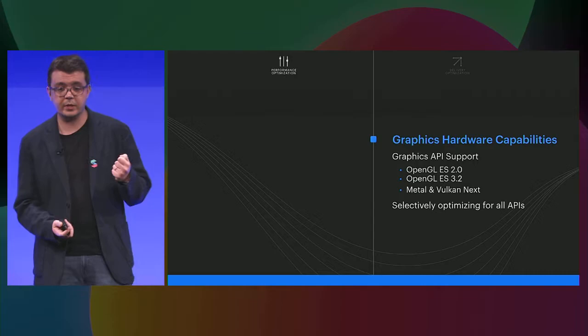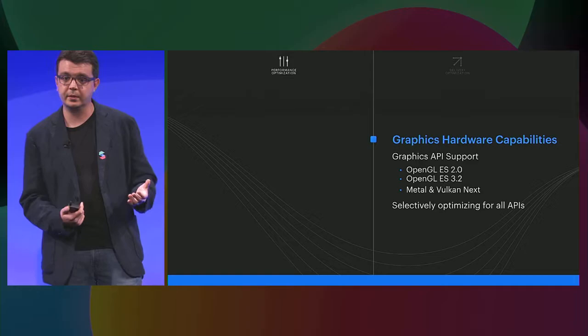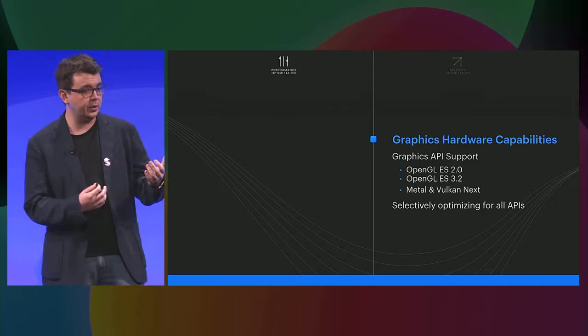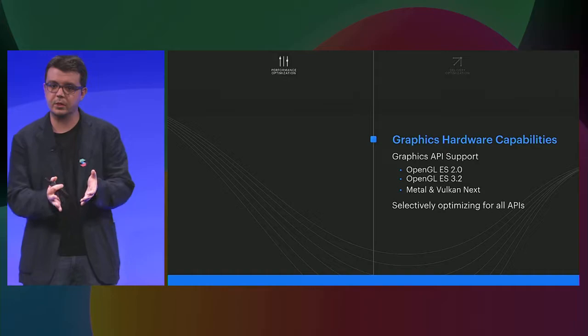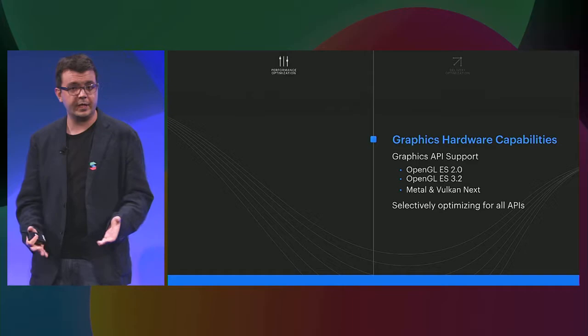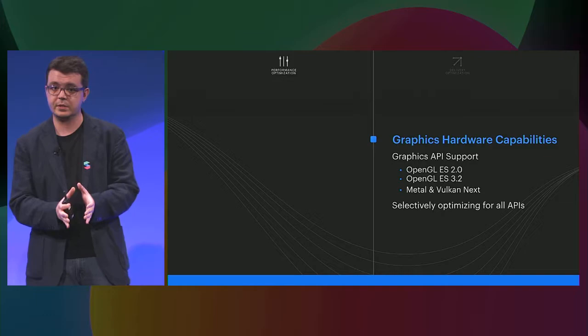We also started looking into Metal and Vulkan. This is one of the reasons we have our own shader pipeline and our own visual shader system. We could allow interfacing directly with GLSL, which is the OpenGL shader language, but we cannot port that content directly to Metal and Vulkan because they use different shading languages. So we created our own shader pipeline and visual shader system to allow just for that — so you can create your content once and it's going to run everywhere.